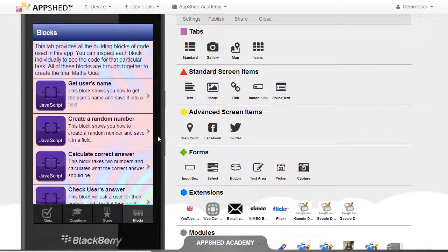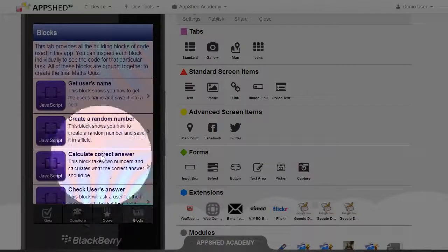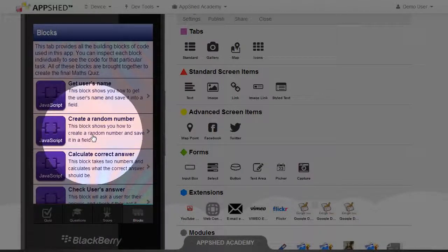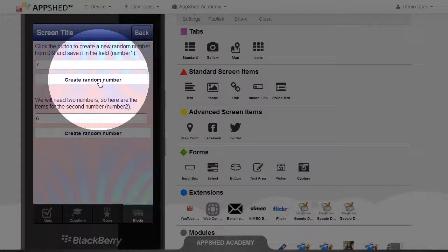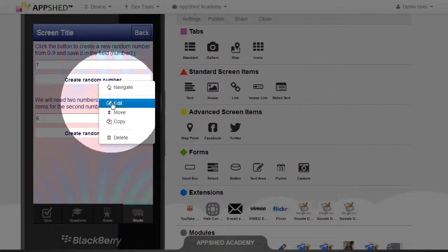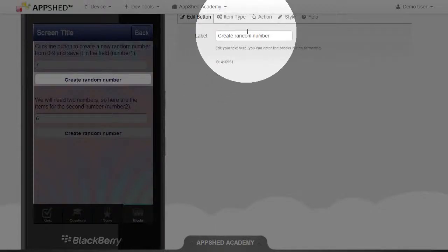One of the blocks we created earlier on the Blocks tab is the JavaScript to create a random number. If you go into that and edit that button, go to the Action,